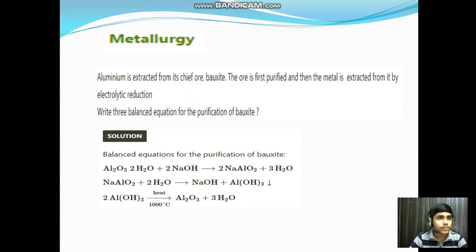Chapter: Metallurgy. Aluminium is extracted from its ore bauxite. The ore is first purified and the metal is extracted from it by electrolytic reduction. Write the three balanced equations for the purification of bauxite. Solution: Bauxite plus sodium hydroxide gives rise to sodium meta-aluminate plus water. Sodium meta-aluminate plus water gives rise to sodium hydroxide plus aluminium hydroxide. Aluminium hydroxide when we heat it gives rise to alumina plus water.